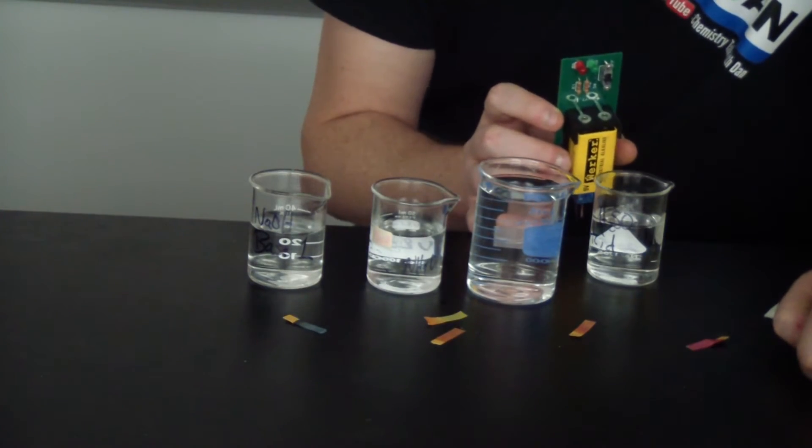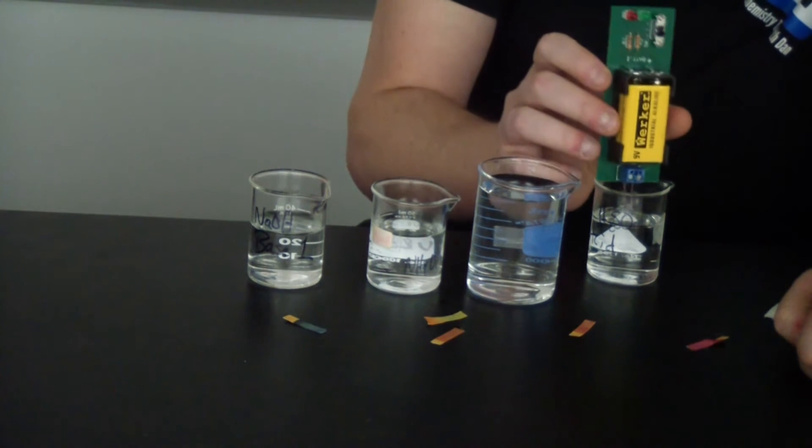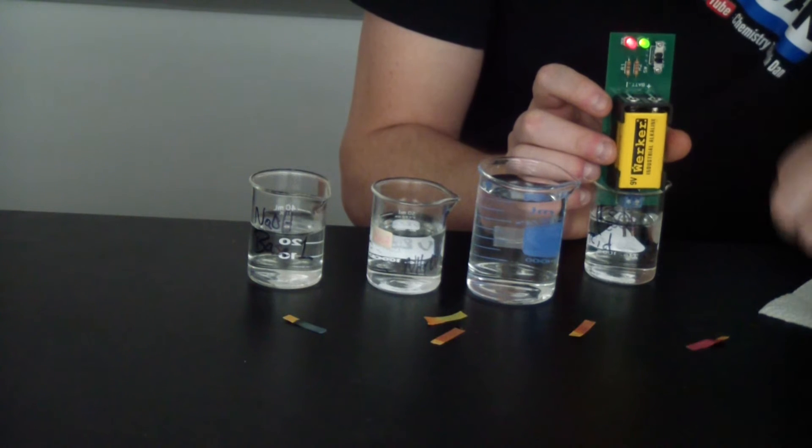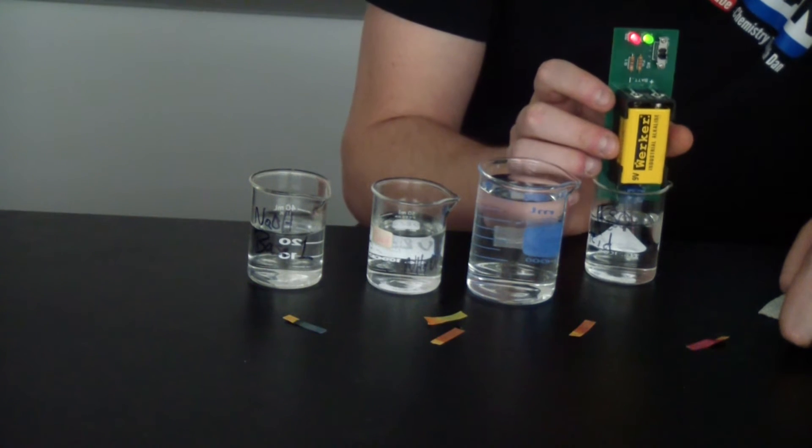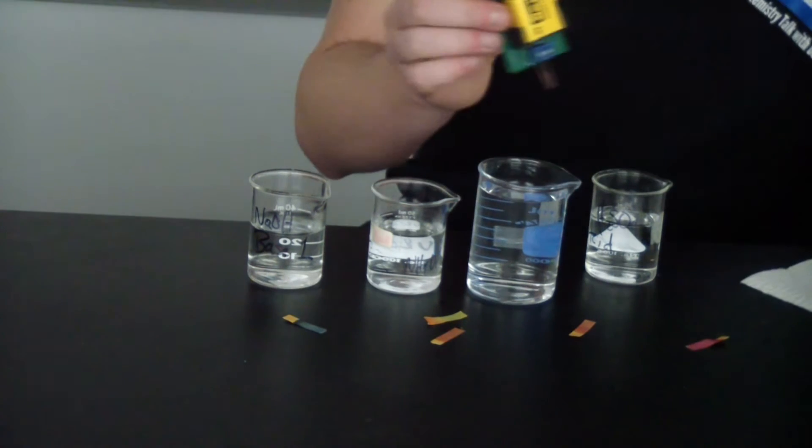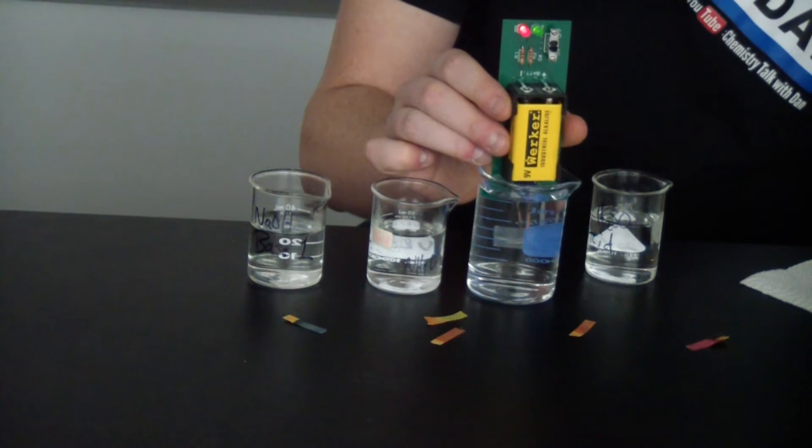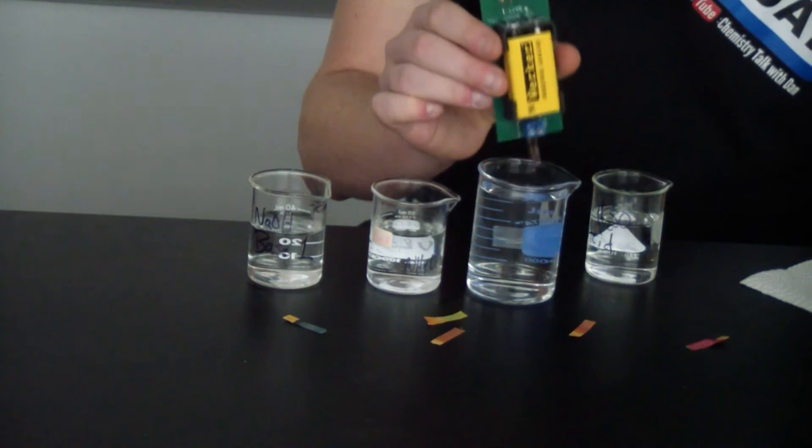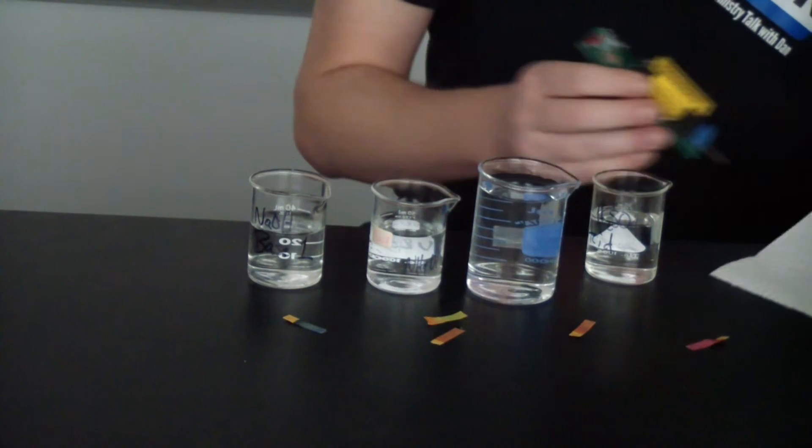Okay, so here we go with a conductivity test. So when we put it into the sulfuric acid, you can clearly see that both lights come on, and it's a pretty strong conductor of electricity there. When we compare that to the vinegar, not quite as much. You can see that the lights only kind of barely come on. So not as good of a conductor.